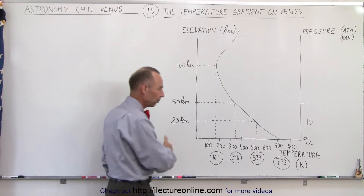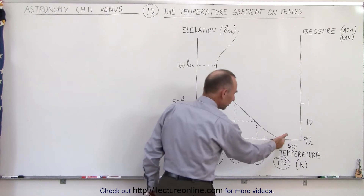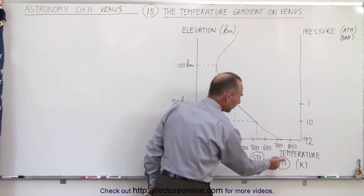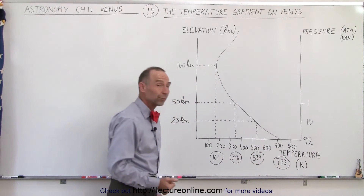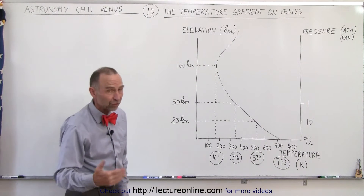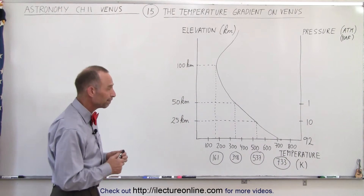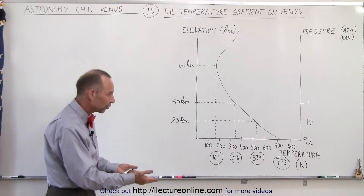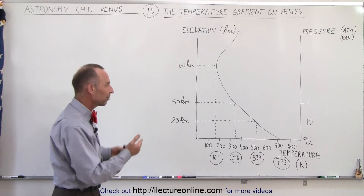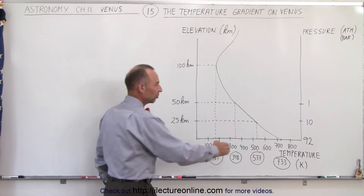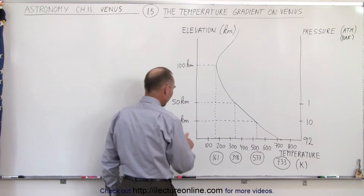At the surface of Venus, the temperature is around 733 Kelvin, which is about 460 degrees centigrade. As you go higher up in the atmosphere, there's a general cool-down curve.